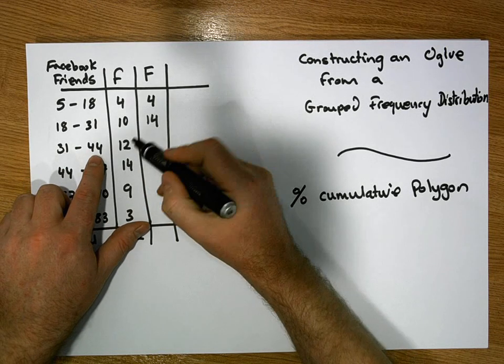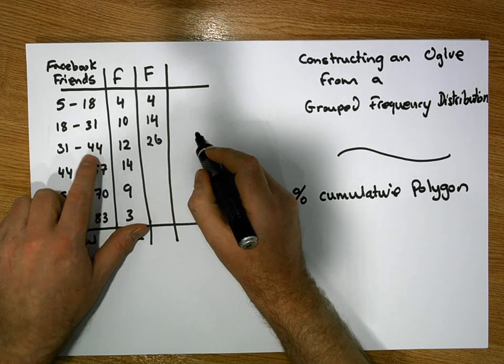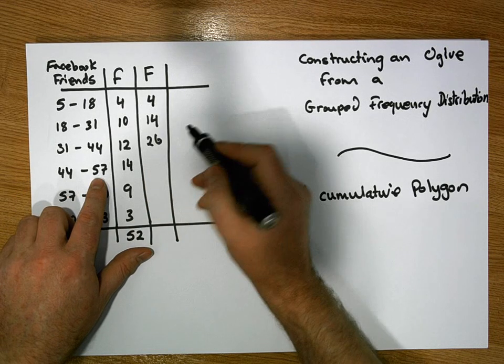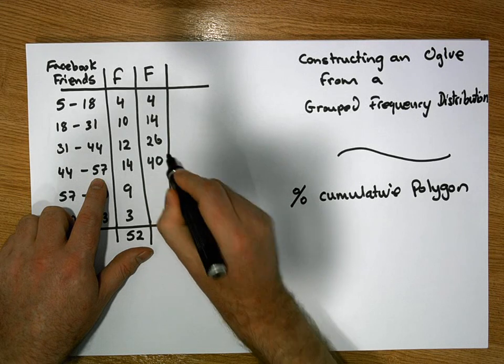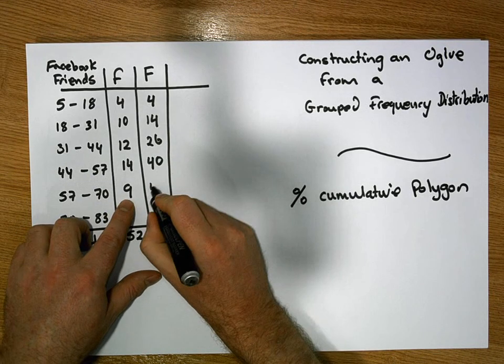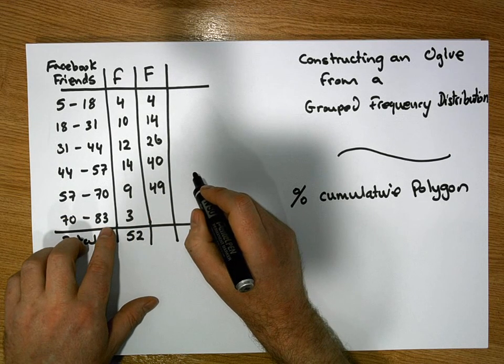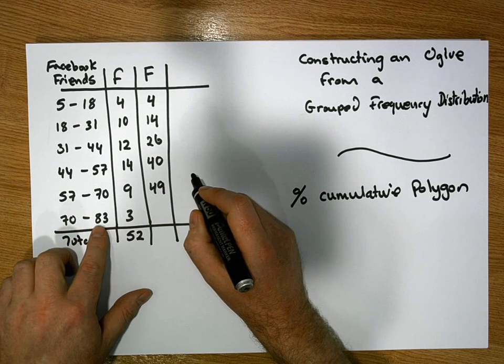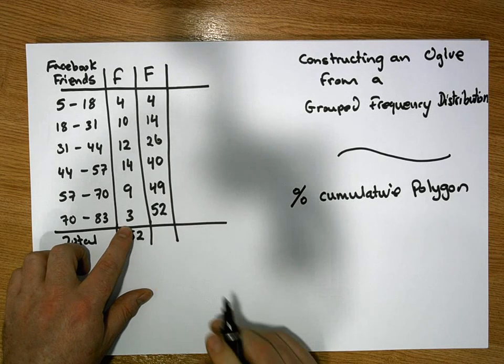How many were less than 44? There's the 12, the 10 and the 4, which gives us 26. How many were less than 57? Well there's the 14 and the previous 26. Gives us 40. How many were less than 70? Well there's the 9 and the previous 40, it's 49. And how many were less than 83? Well all the observations were less than 83, or the 3 that were in this class and also the previous 49, which gives us 52.